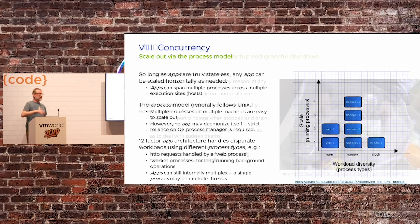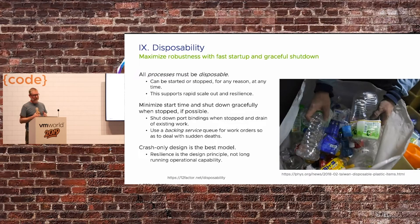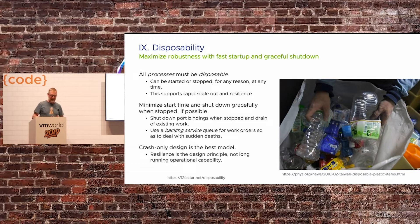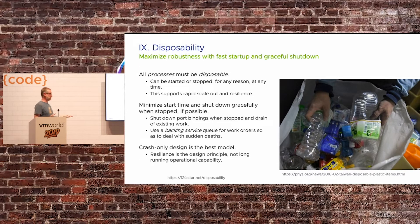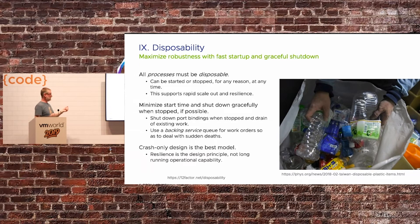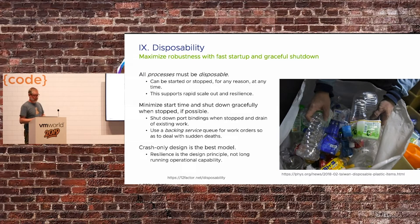Ninth: disposability. We want to just be able to kill and fill these types of applications — shoot them in the head, throw them away — but you must be able to kill your process and feel safe about doing that. Things are going to die all the time, and if you develop your application to handle that failure safely, that's the best thing you could do.